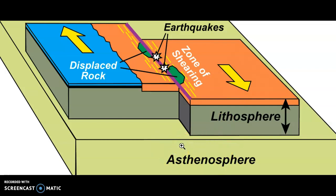Bear in mind that at transform plate boundaries, there is no subduction, there is no convergence, and there is no divergence. That means there are no molten materials coming up to the surface. The actual plate is subjected to movement, but we don't have any volcanic activity. We do not have any volcanic island arcs. So transform plate boundaries are not associated with volcanoes, and they are also not associated with volcanic island arcs.